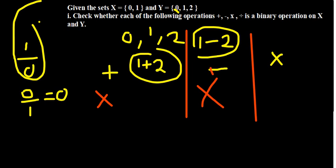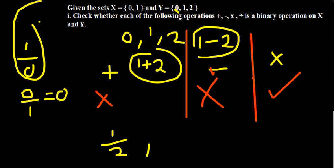Finally, division on set Y is not going to be a binary operation. One divided by two gives one half, which is not part of the set. Additionally, two divided by zero or one divided by zero is an impossibility. So division is therefore not a binary operation on set Y — only multiplication is a binary operation on that set.